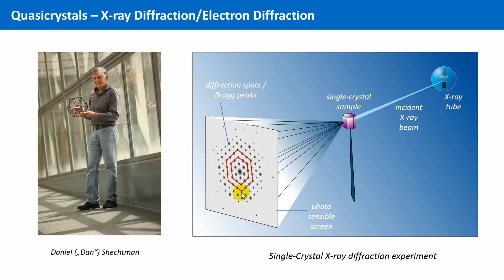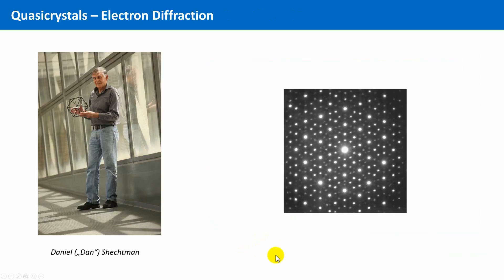And now, what Dan Schechtman saw when he performed the electron diffraction experiments with his new alloys was something like that. He couldn't believe his eyes. A diffraction pattern with a tenfold rotational symmetry. And also these local fivefold patterns are clearly visible. Skeptical, Schechtman wrote in his lab journal, tenfold? Could he have found a new state of matter? A crystal with forbidden symmetry? How should something like this be possible?